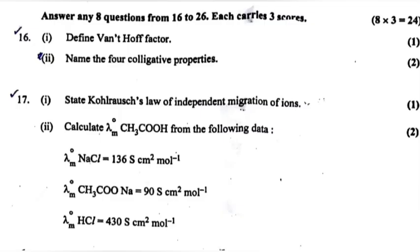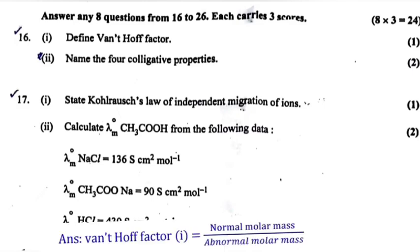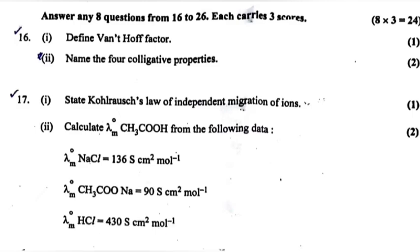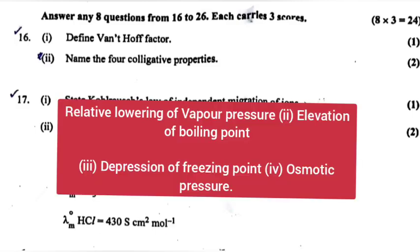Question 16, Part 1: Define Van't Hoff factor. Answer: Normal molar mass divided by abnormal molar mass. Part 2: Name the four colligative properties. Answer: 1. Relative lowering of vapor pressure. 2. Elevation of boiling point. 3. Depression of freezing point. 4. Osmotic pressure.